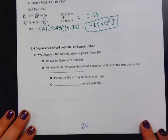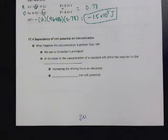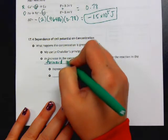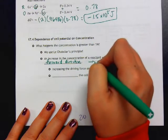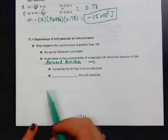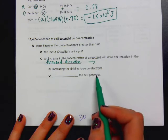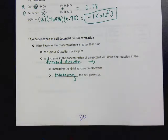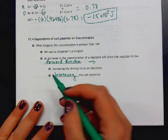The next part is to talk about the dependence of cell potential on concentration. We want to think about what happens if our concentration is greater than one molar, that is our standard. We're going to think about Le Chatelier's principle. An increase in the concentration of a reactant will drive the reaction in a forward direction. The forward direction means it's going towards the products, making more product. If we're making more product, we're increasing the driving force on our electrons and thereby increasing our cell potential.